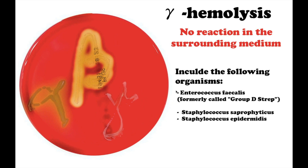Gamma hemolysis includes the following organisms: Enterococcus faecalis, formerly called group D strep; Staphylococcus saprophyticus; and Staphylococcus epidermidis.